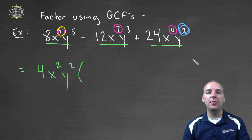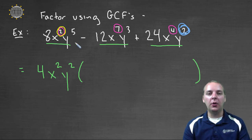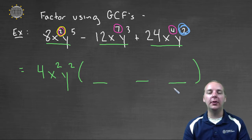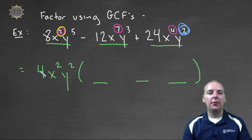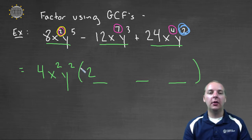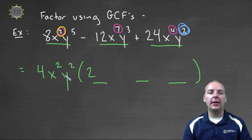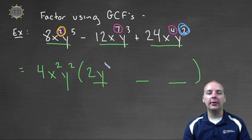Once the GCF is factored out, we think about what's remaining inside the polynomial. There are still three terms — they'll just be a little different. For the first term: four times two, x squared times one, and y squared times y to the third gives y to the fifth. For the second term: four times negative three, x squared times x to the fifth gives x to the seventh, and y squared times y to the first gives y to the third.